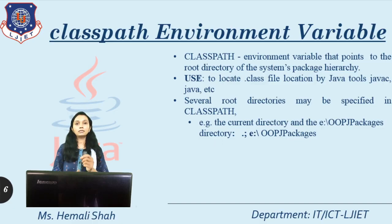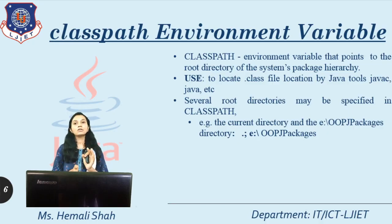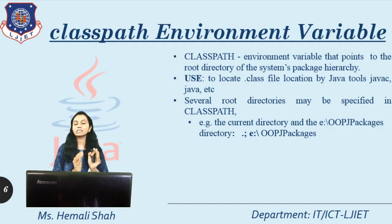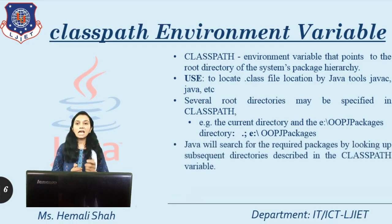To specify multiple paths in the classpath environment variable, use a semicolon between values. For example, if I want to set the current directory and also the E drive OPJ Package folder, I can write: dot semicolon E:\OPJPackage. The semicolon is used for concatenation to specify more than one path for searching packages. Java will then search for the required package by looking through each directory listed in the classpath variable.